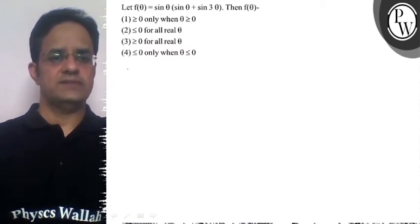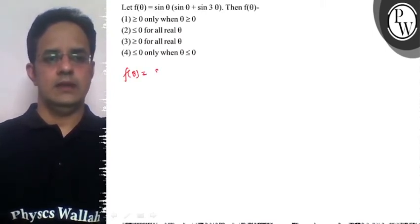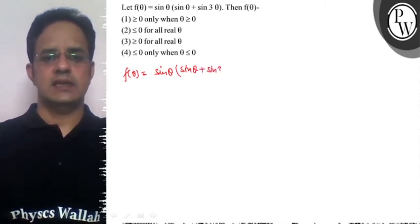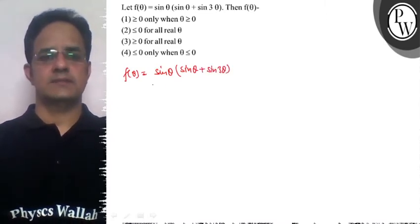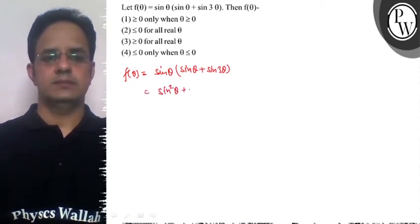So the function f(θ) is sin(θ) × (sin(θ) + sin(3θ)), which means it is sin²(θ) + sin(θ)sin(3θ). Now sin(3θ) = 3sin(θ) - 4sin³(θ).